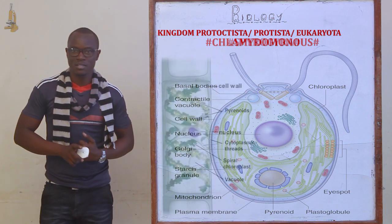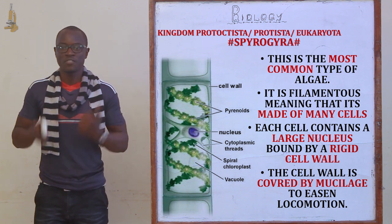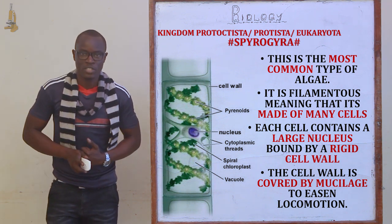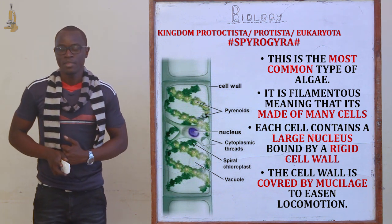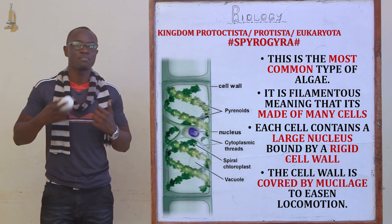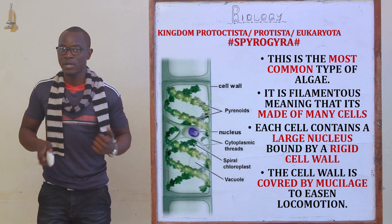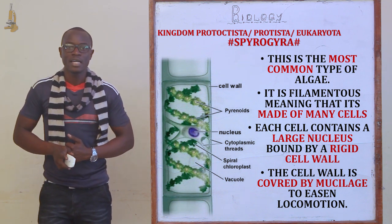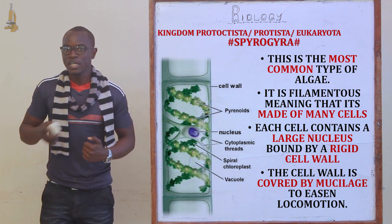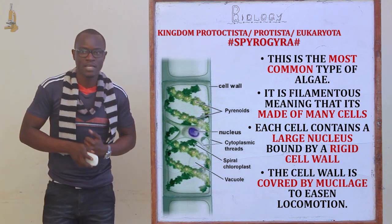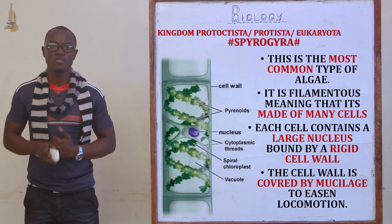Now let's look at the next type of algae in Kingdom Protoctista, which is the filamentous algae referred to as Spirogyra. Spirogyra is the most common type of algae known. It is filamentous, meaning that it is made up of very many cells. Each cell has a large nucleus, and the cell is bound by a rigid cell wall made up of cellulose.